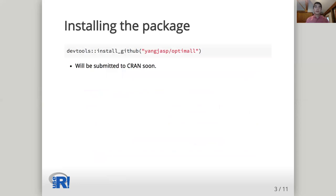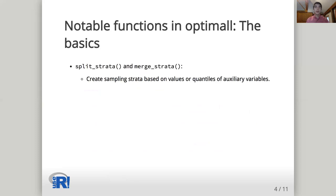OptiMall is currently available on GitHub, and it can be installed with the install GitHub function from DevTools using yangjasp.com. It will be submitted to CRAN soon. To illustrate the utility of the package, I will introduce some of the notable main functions in OptiMall, beginning with basic ones that may apply to any survey.